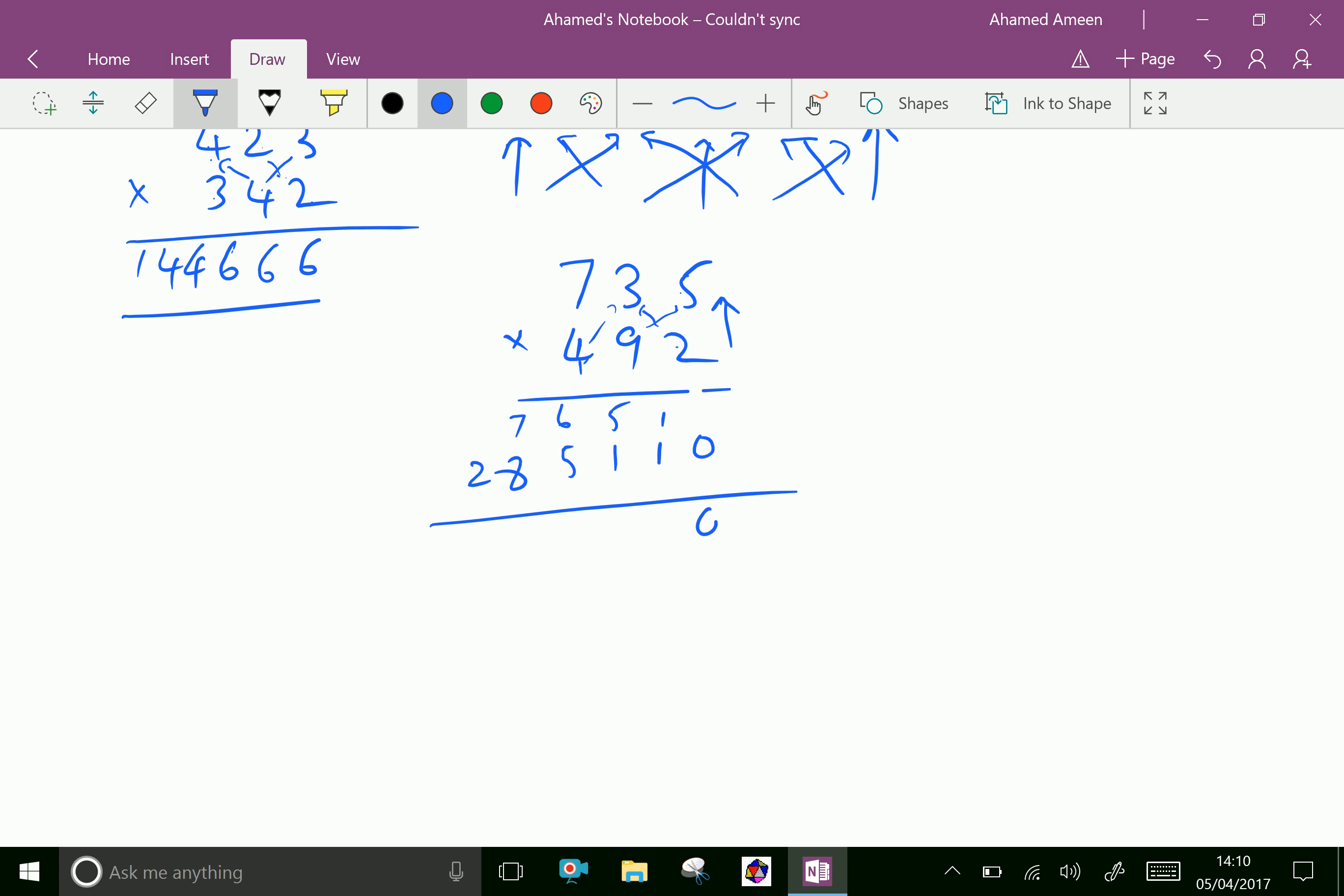Add them: 0, 1 plus 1 is 2, 5 plus 1 is 6, 6 plus 5 is 11, 1 carries. 7 plus 1 is 8, 8 plus 8 is 16 and 1 carries. The final answer is 361620.